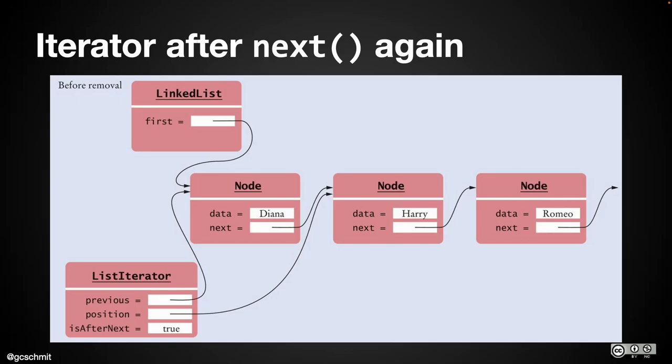Any questions about that before we start writing the code? That's a big conceptual change and an extra layer of complexity. Why do we care about the two elements before? Excellent question — we're going to need that when we start removing nodes. If we didn't have that information, when we remove a node we wouldn't be able to link our list back up.